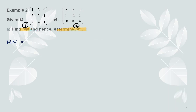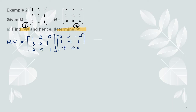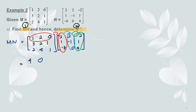Write down MN as the multiplication to be performed. We put matrix M with elements 1, 2, 0, 3, 2, 1, 2, 4, 1 and then matrix N with elements 2, 2, negative 2, 1, negative 1, 1, negative 8, 0, 4. Let's do the multiplication. We do the first row with each column. For the first element you get 4, the next element in the first row with the second column gives 0, and the first row with the third column gives 0. The other corresponding values are computed similarly.